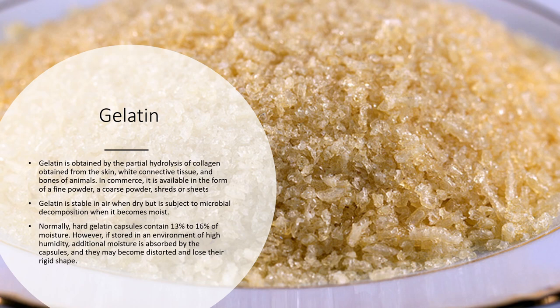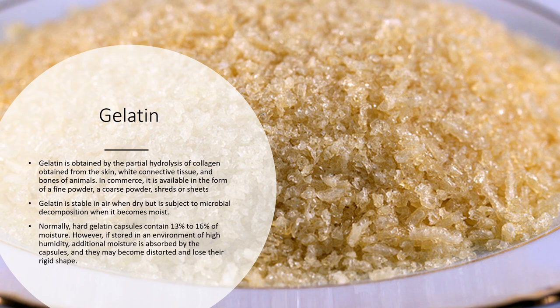If you encounter old capsules, they don't have the flexibility they once had — they are either brittle, meaning they were exposed to hot air, or soft, meaning they were exposed to moisture. Hard gelatin capsules contain 13% to 16% moisture. If exposed to high humidity, additional moisture can be absorbed by the gelatin, causing the capsule to distort, deform, shrink, or lose its rigid shape. If you handle very soft capsules, it may be wise to dispose of them.